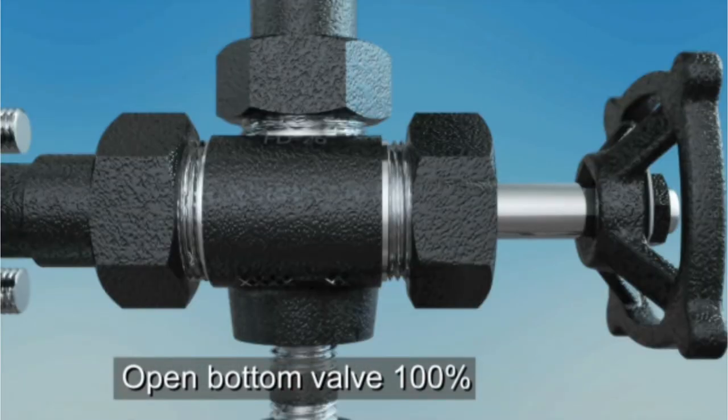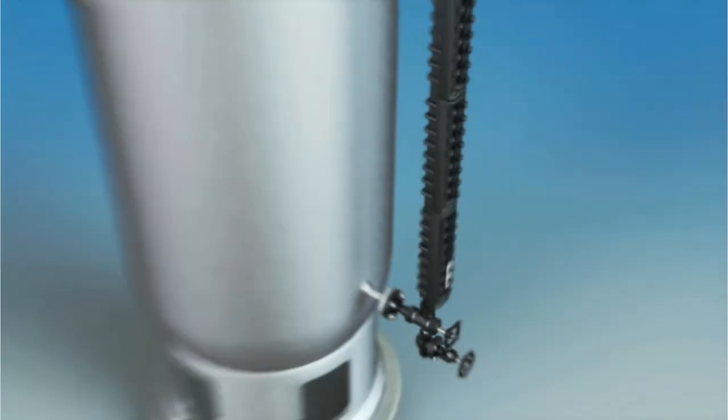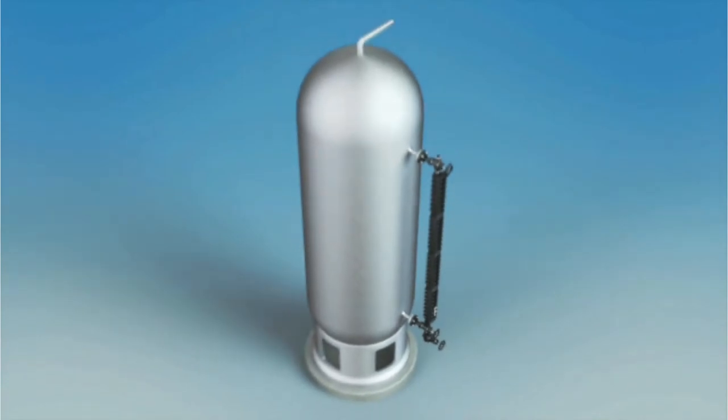Next, fully open the bottom valve. The tip of each stem has now been retracted into its seat cavity, allowing the ball checks to engage in the event of a catastrophic failure.